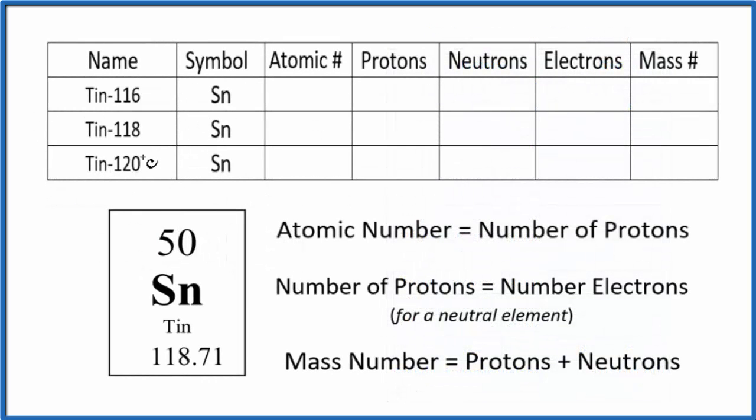So these are the three isotopes of tin we're going to look at. The first thing to note is that when we look at an element, its atomic number, that's this number right here, the atomic number, that tells us the number of protons. The atomic number equals the number of protons. So for tin, all the isotopes of tin,